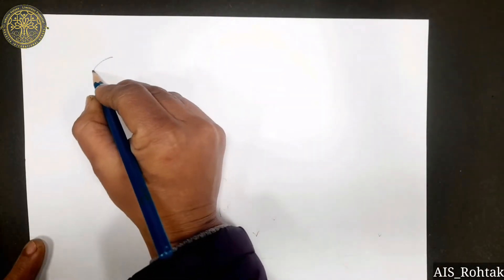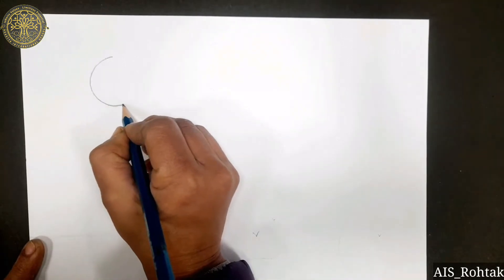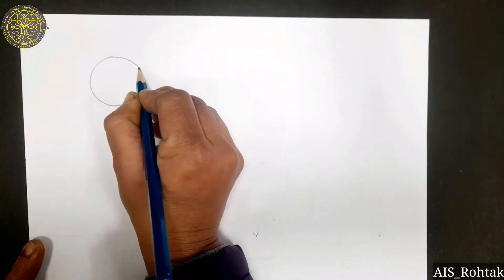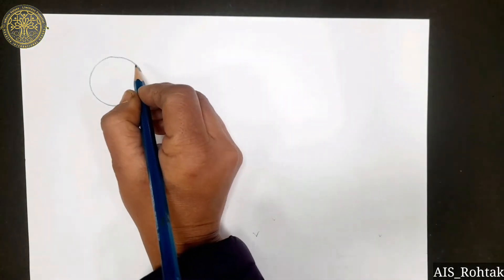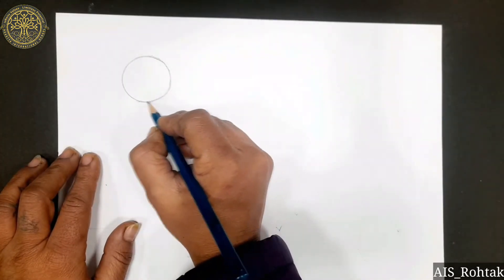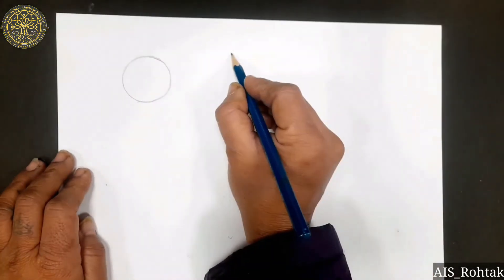First of all, draw a circle on the topmost left side. We are going to draw the sun. To draw the clouds, draw some curves.